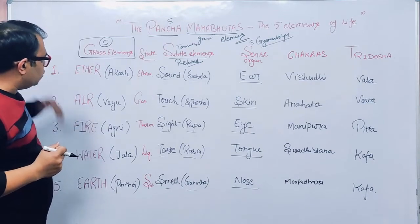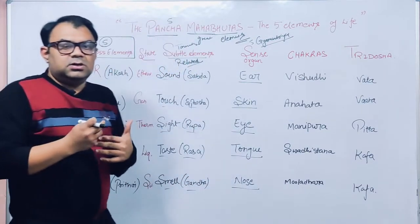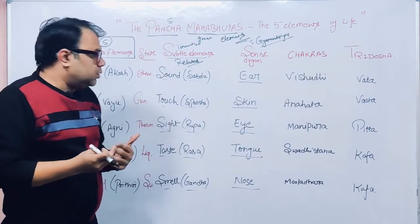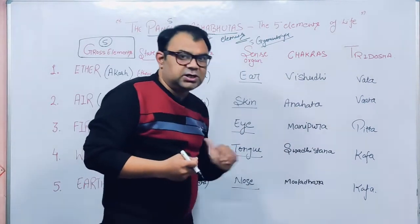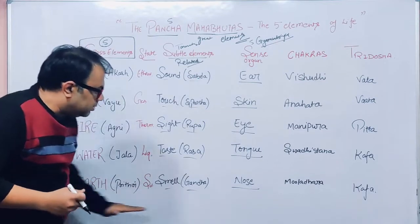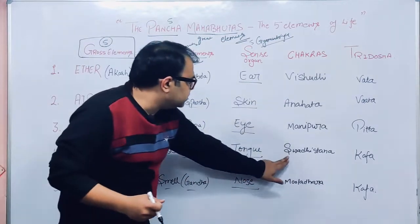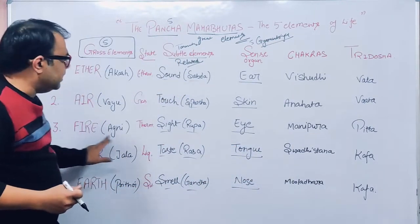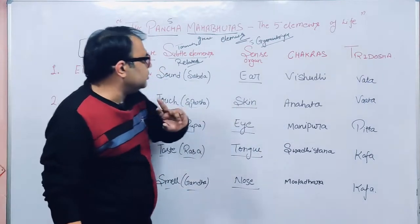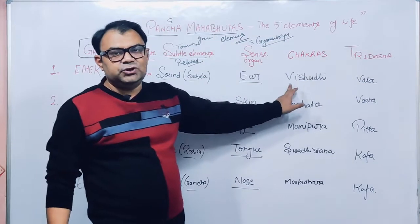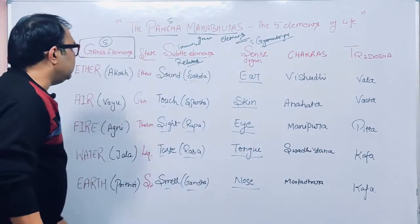Now, if I talk about the correspondence of these five elements with the chakras — we have seven chakras in our body, and five of them correspond to these five elements. The earth element corresponds to the Mooladhara chakra, water to the Swadhisthana, fire to the Manipura, air to the Anahata chakra, and ether to the Vishuddhi chakra.